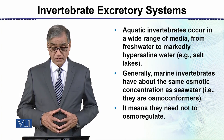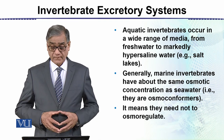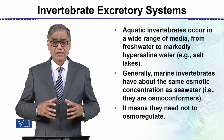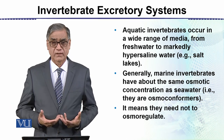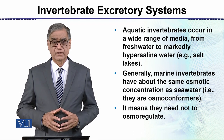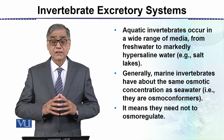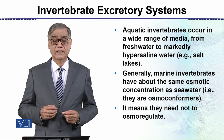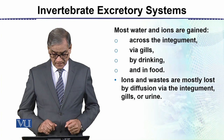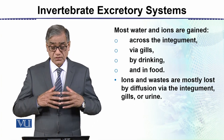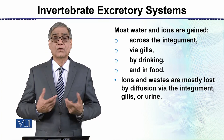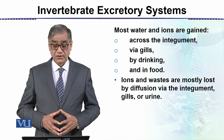Generally, marine invertebrates have about the same osmotic concentration as the sea water — that is, they are osmoconformers. There are so many animals in marine water. They are in fact osmoconformers, not osmoregulators, which means they need not to regulate osmotically. Most of the water and ions are gained by animals and then lost to maintain or regulate balance.